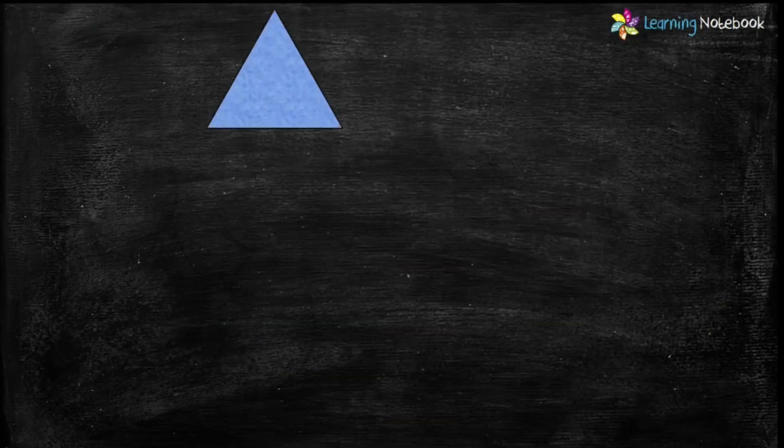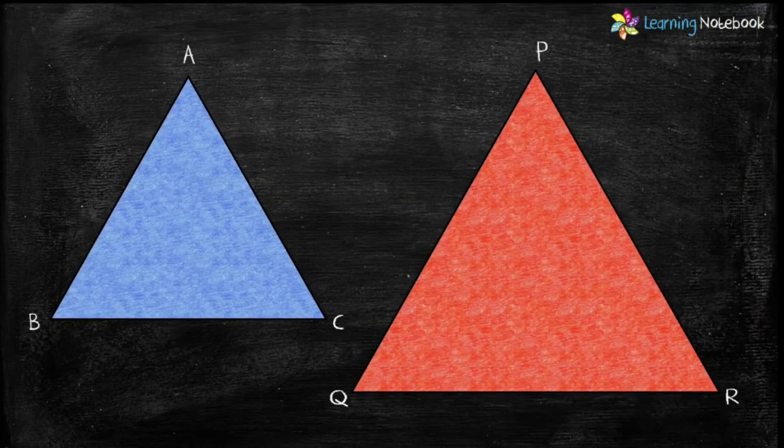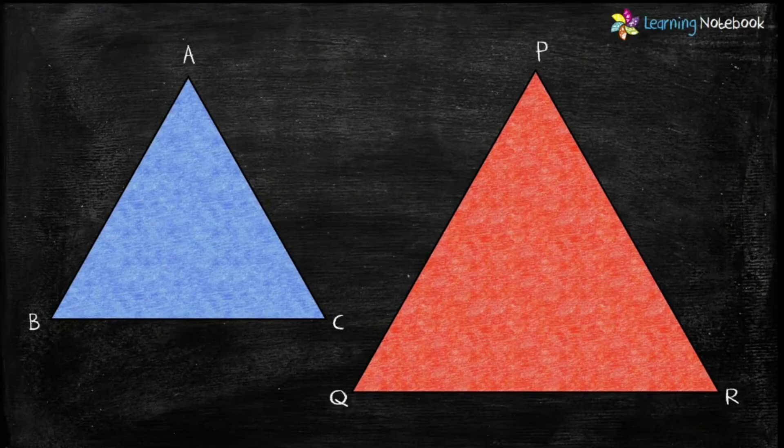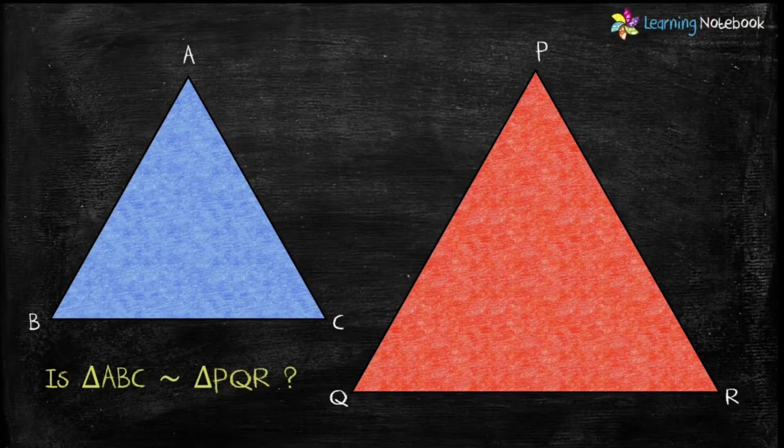Now we have two triangles, triangle ABC and triangle PQR. Let's see if triangle ABC is similar to triangle PQR.